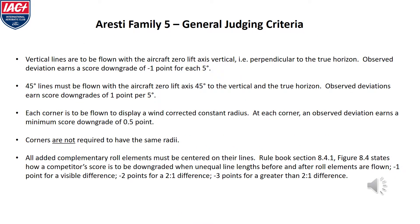When judging Aresti Family 5 figures flown by a competitor, vertical lines are to be flown with the aircraft's zero-lift-axis vertical, perpendicular to the true horizon. 45-degree lines are to be flown with the aircraft's zero-lift-axis 45 degrees to the true horizon, and are not wind-corrected. Each corner is to be flown to display a wind-corrected constant radius. Corners are not required to all have the same radii, and all added roll elements must be centered on their lines.